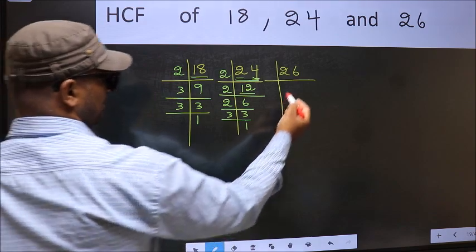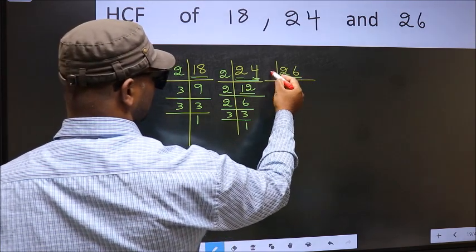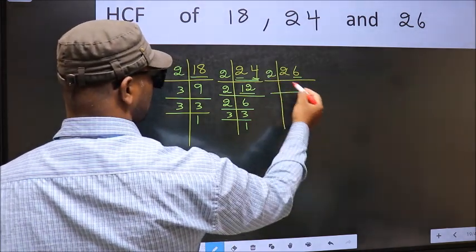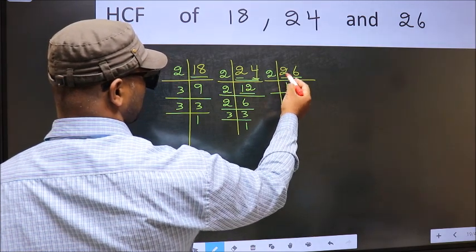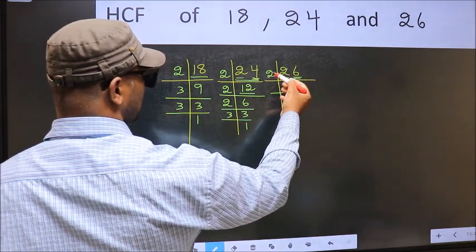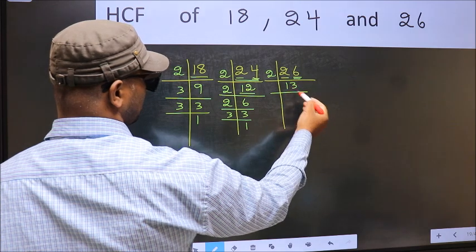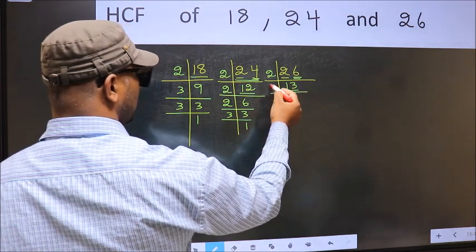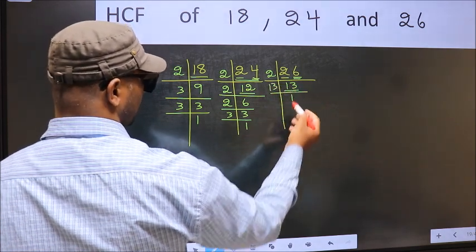The other number. Last digit 6, even, so take 2. First number 2, when do we get 2 in 2 table? 2 times 1. The other number 6, when do we get 6 in 2 table? 2 times 3. Now, 13 is a prime number, so 13 times 1.